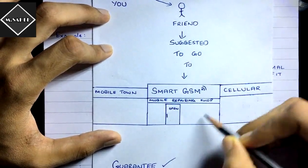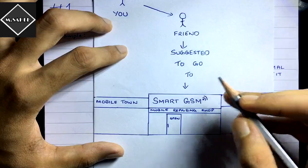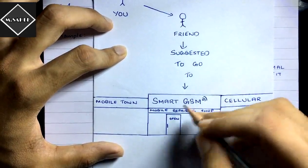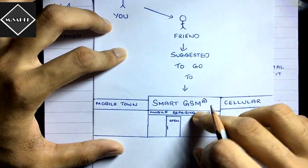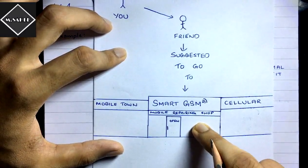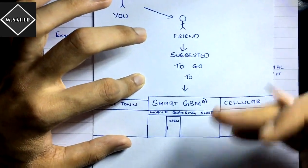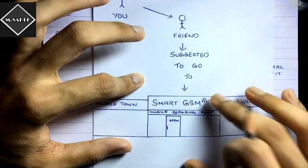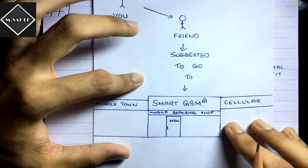Due to the goodwill of Smart GSM, customers are attracted to come to this shop rather than other shops in the market. Goodwill is attracting the customers and expanding the profit-earning capacity of Smart GSM. Your friend's word-of-mouth suggestion means you'll go to this shop only. This is what goodwill does — it stimulates the profit-earning capacity of the business and helps generate more profit. Goodwill is an advantage that one business has over other businesses.